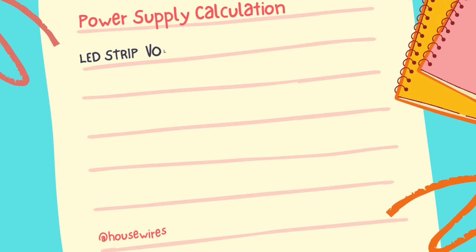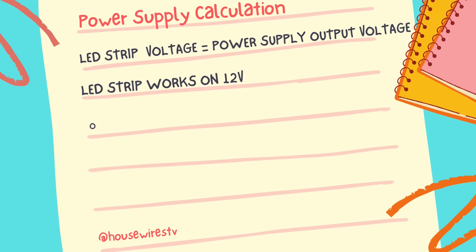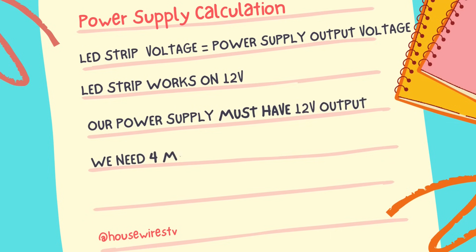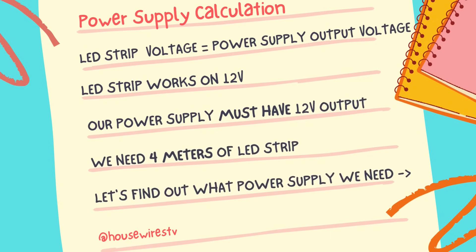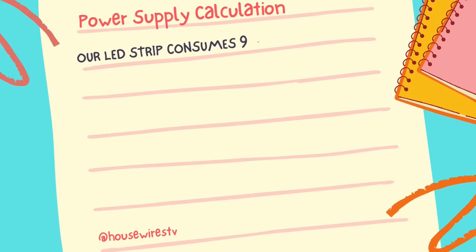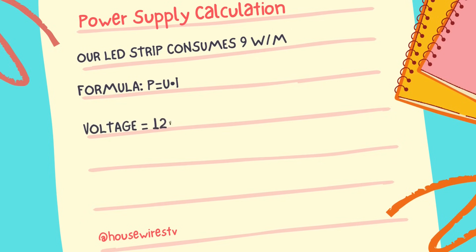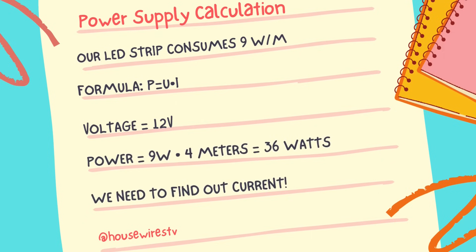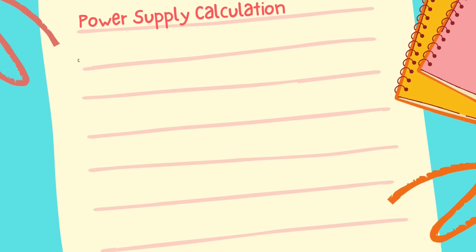What is important here: the voltage from the LED strip must match the power supply output voltage. For example, let's say we need 4 meters of LED strip — enough for a kitchen or living room. Our LED strip has 9 watts per meter, so 4 meters gives us 36 watts total. Using the formula Power = Voltage × Current, with 12 volts and 36 watts, the current works out to 3 amps.